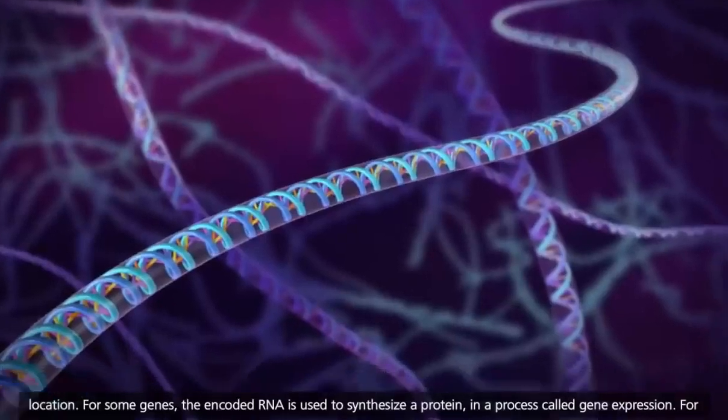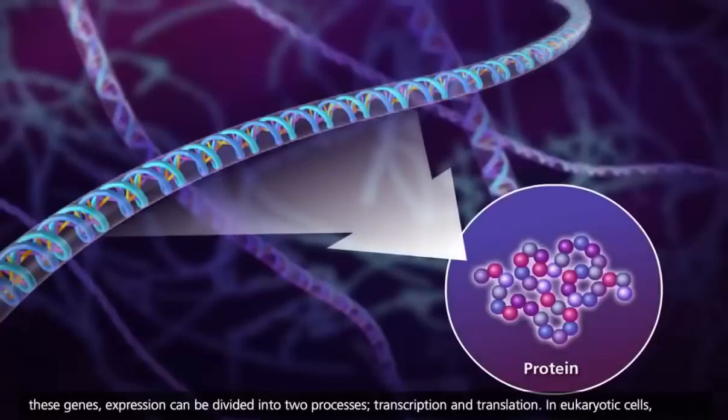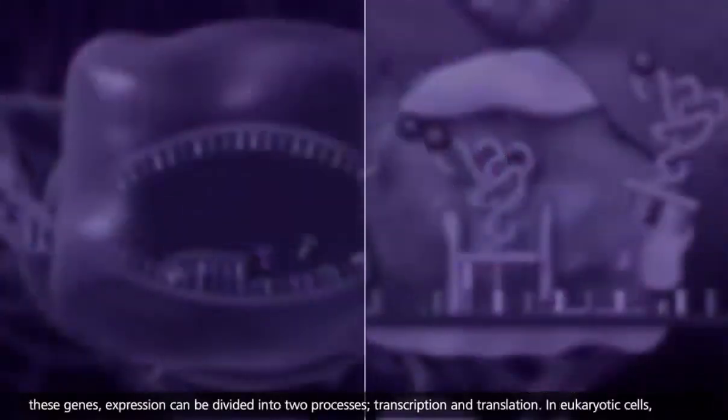For some genes, the encoded RNA is used to synthesize a protein in a process called gene expression. For these genes, expression can be divided into two processes: